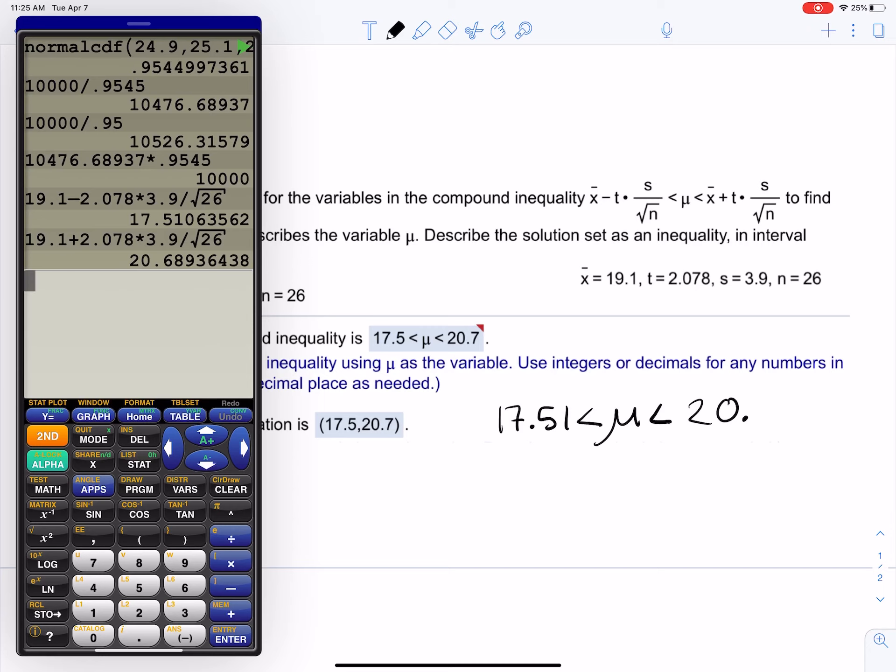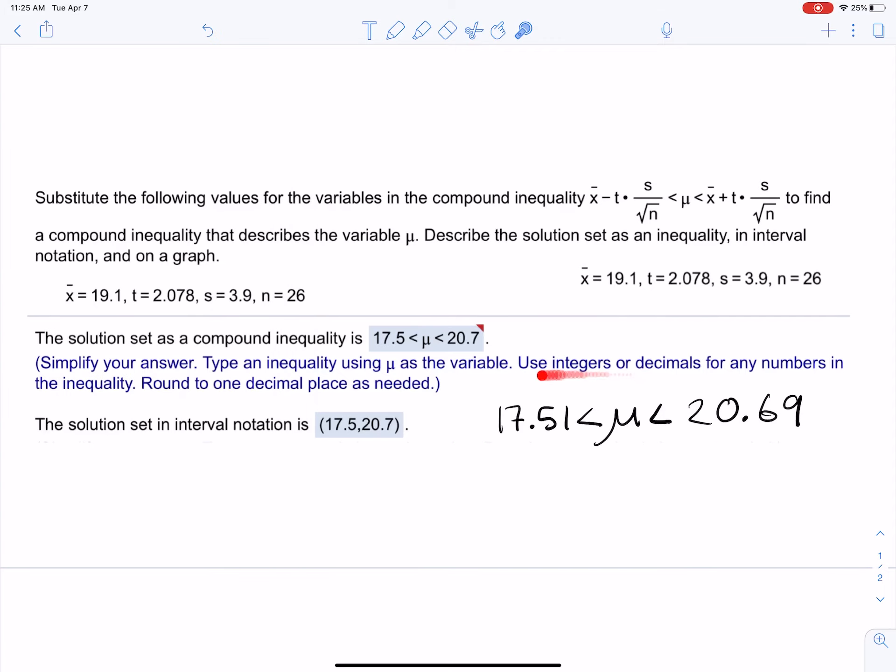I'm getting 20.69. Alright, so look at that—you see how we plugged it into our calculator. Easy as that. You can just copy and paste for the second one to go from the minus to the plus sign. This right here is inequality notation. If we round it, we'll get 17.5 and 20.7 like they got.